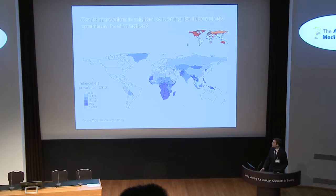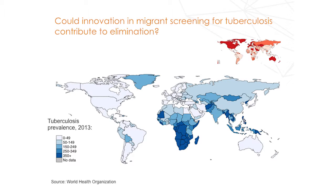What you'll notice from this graph here, which shows tuberculosis prevalence in countries, is that most of the low-incidence countries have the highest number of migrants. And what I'm going to look at in this research is trying to understand whether innovation in migrant screening for tuberculosis could contribute towards the goal of tuberculosis elimination within low-incidence countries.